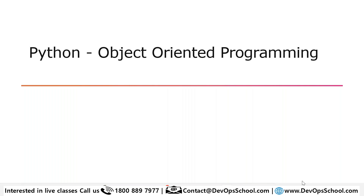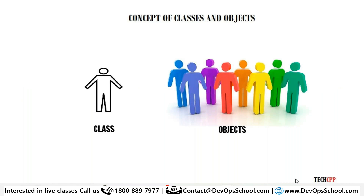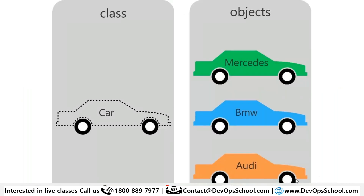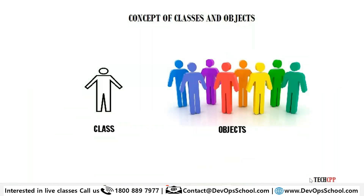The idea right now is that you should start writing system programming using Python, not software development. If you want to automate system tasks you should be able to do that. So what is a class? A class is like 'human' and when you instantiate a class you get multiple objects. Whatever properties the class has are inherited by the objects.